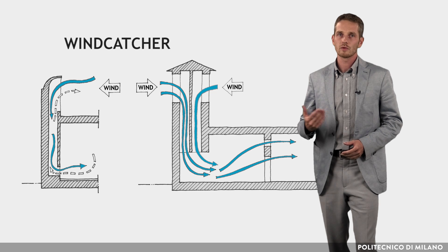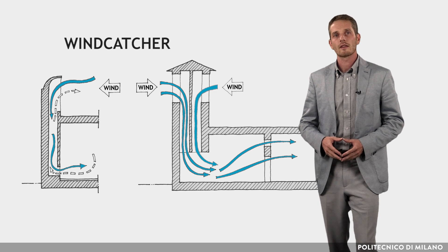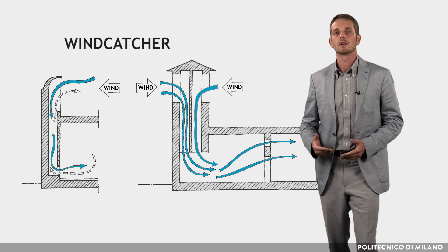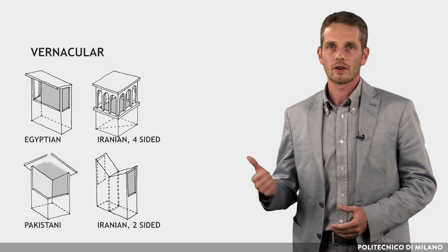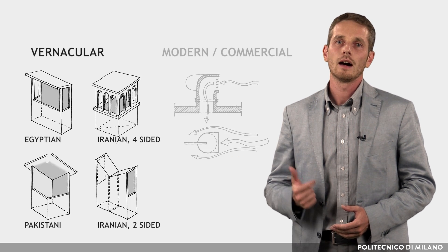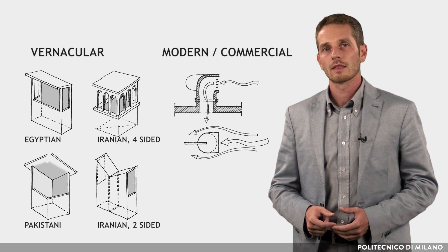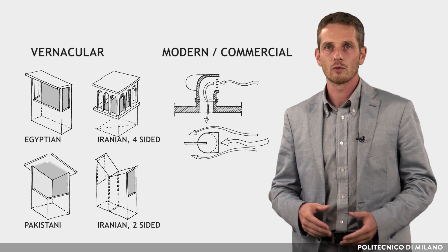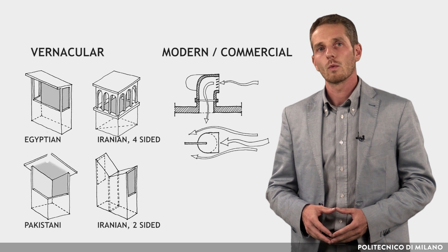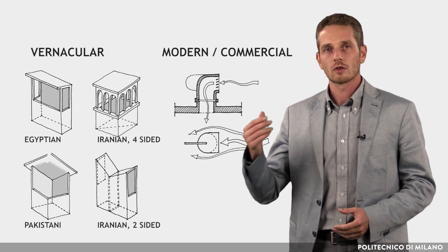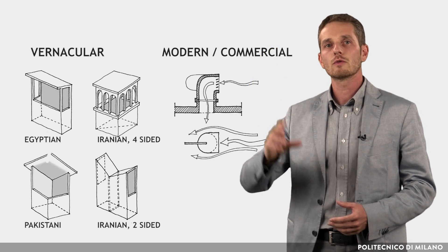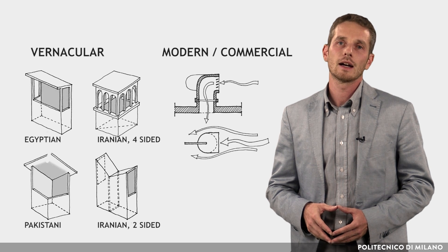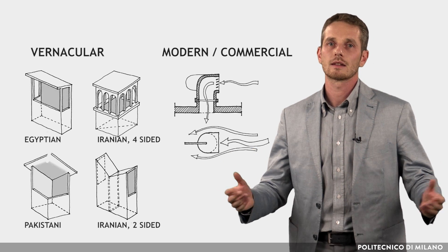A prerequisite for using a wind catcher is that the site should experience winds with fairly good consistent speed. Wind catchers can be categorized in two groups: vernacular wind catchers and modern or commercial ones. The foundation of these types of wind catchers is almost the same. Wind catcher inlets, in order to rise above the layer of turbulence and drag, should be at least 2.4 meters above the height of the surrounding buildings and obstructions.